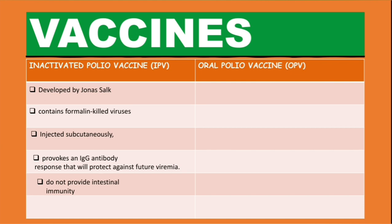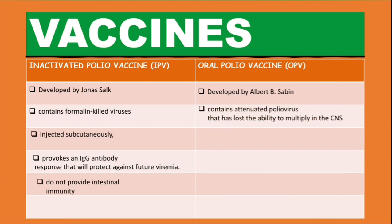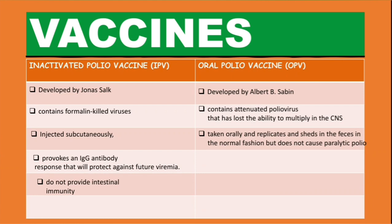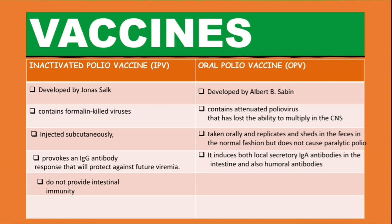The oral polio vaccine, or OPV, was developed by Albert B. Sabin and is sometimes known as the Sabin vaccine. It contains attenuated poliovirus that has lost the ability to multiply in the central nervous system. It is taken orally, replicates, and is shed in the feces in the normal fashion, but does not cause paralytic polio. This vaccine induces both local secretory IgA antibodies in the intestine and humoral antibodies — IgM and IgG.